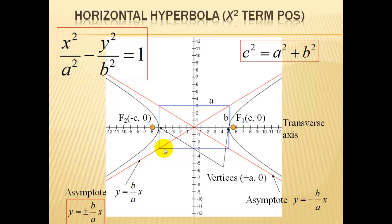We can draw the asymptotes by creating this bounding box. If we need to know the equations of the asymptotes for a horizontal hyperbola, it's b over a times x, that line, so the slope of the asymptote is b over a, or minus b over a for the other asymptote.